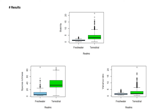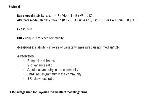After initial data exploration, we can see the terrestrial realm has higher stability and higher species richness than freshwater realms, while the variance ratios are quite similar between the two realms. Here we are showing model setup only for two taxa — birds and fish — as they are the dominant taxa in terrestrial and freshwater realms respectively. For the basic model, we considered only two predictors: richness and variance ratio. For the alternate model, we considered all five predictors: richness, variance ratio, total asymmetry, net asymmetry, and skewness ratio. We are using the brms package for Bayesian mixed-effect modeling.